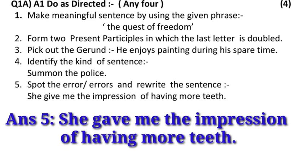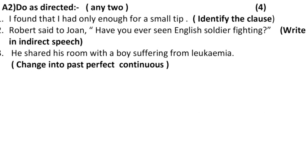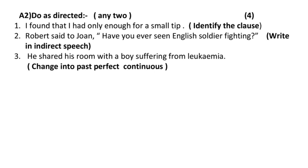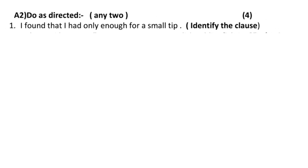In this manner I have given you answers to all five questions which came in question number 1A — 'do as directed' — meaning you can attempt any four if this question arises in the exam. Now let us move on to the second part, that is question number 1A, A2 — 'do as directed.' You have to solve any two out of three questions given.